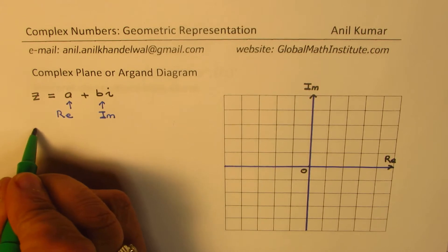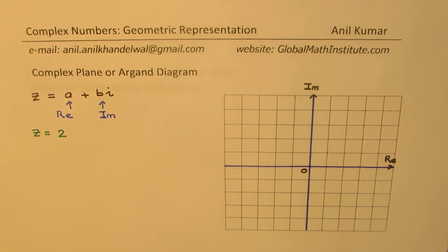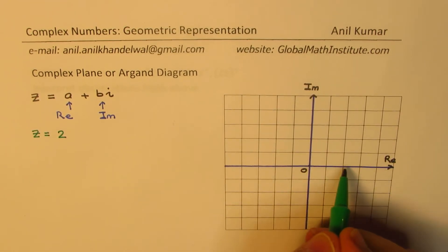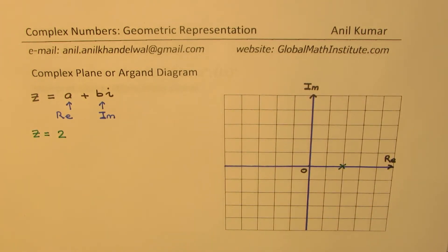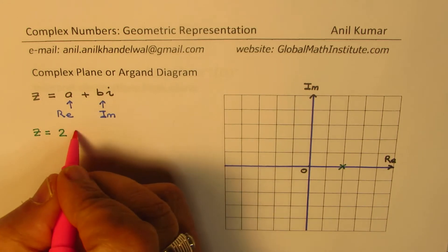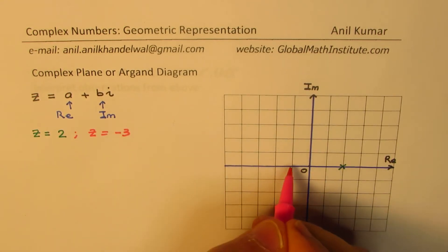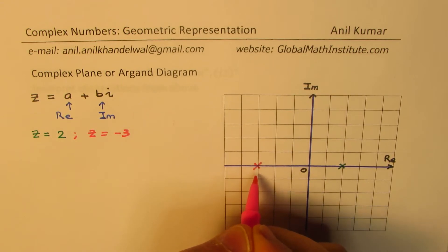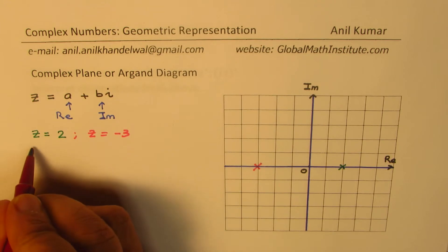Let's say the complex number is just a real part — z equals 2. Z equals 2 really means a point along the x-axis at position 2. If there is a point z equals minus 3, then minus 3 will be represented on the other side. So as you can see, the real parts are represented on the horizontal axis.